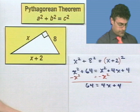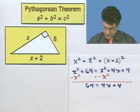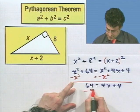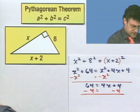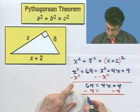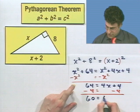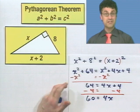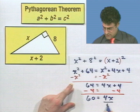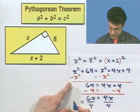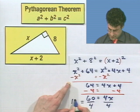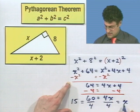So now I subtract 4 from both sides. And I'm left with 60 equals 4X plus 0. Now, to solve for X, I just divide by 4. And 60 divided by 4 is equal to 15. And so X equals 15.